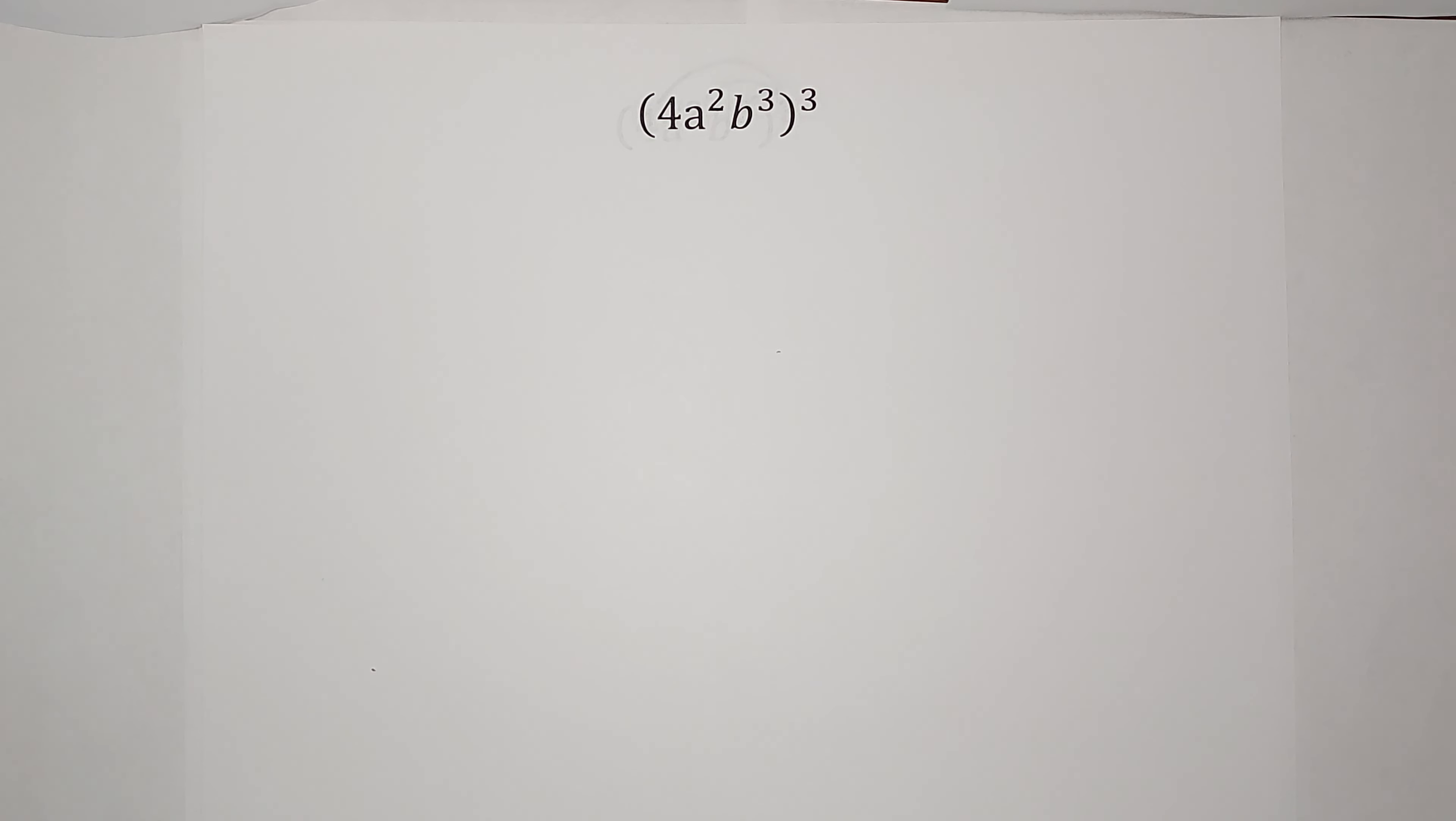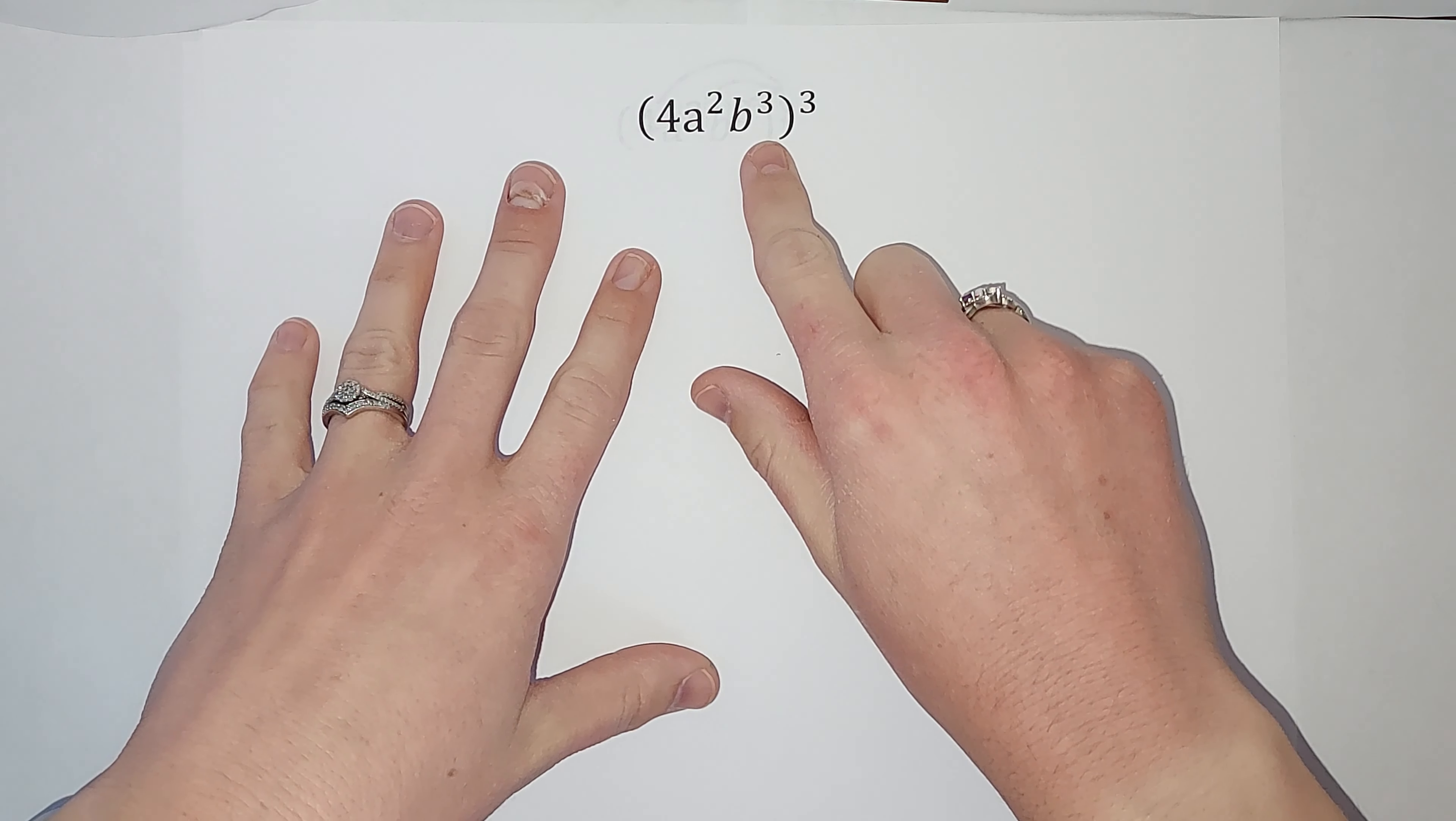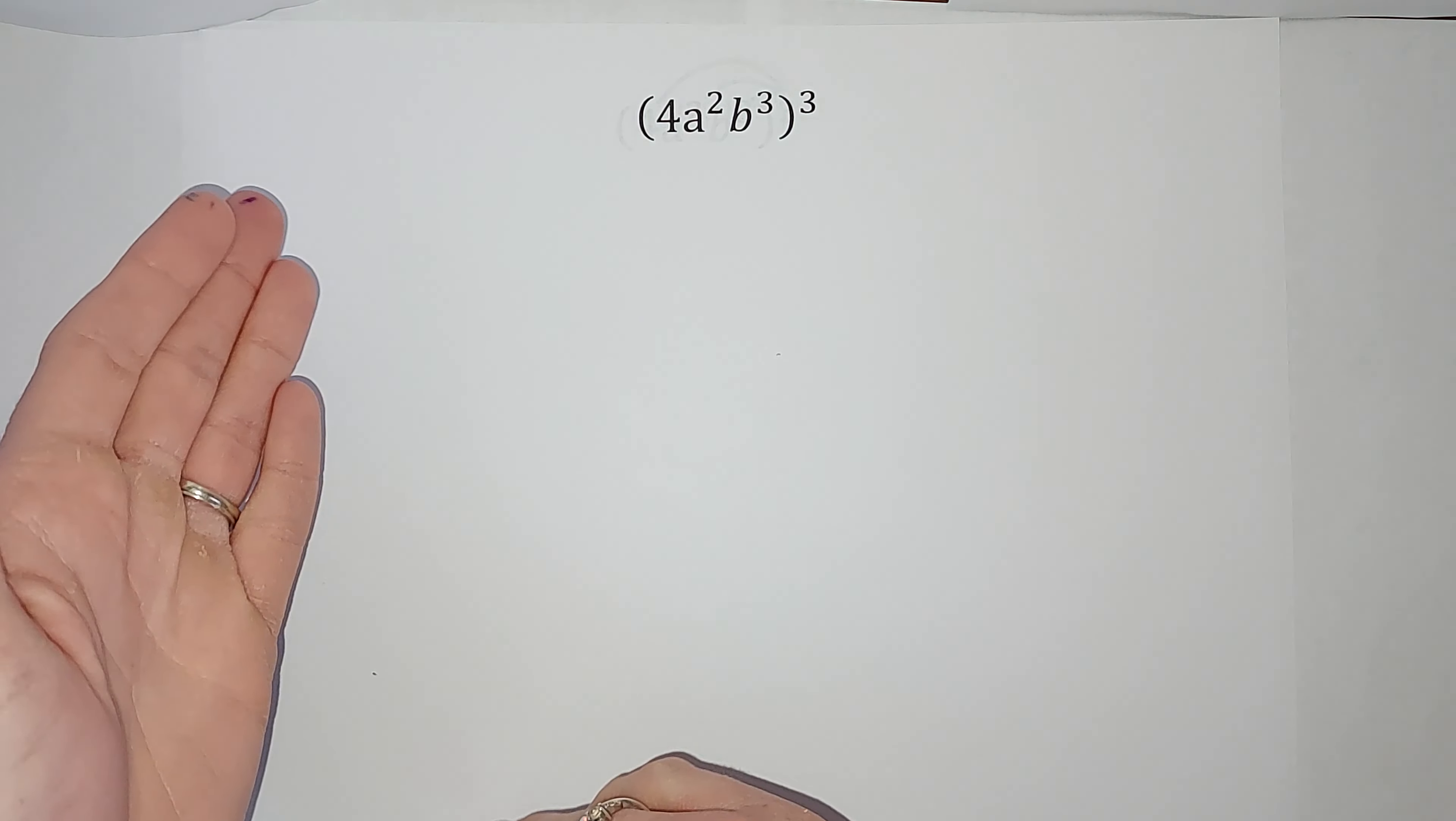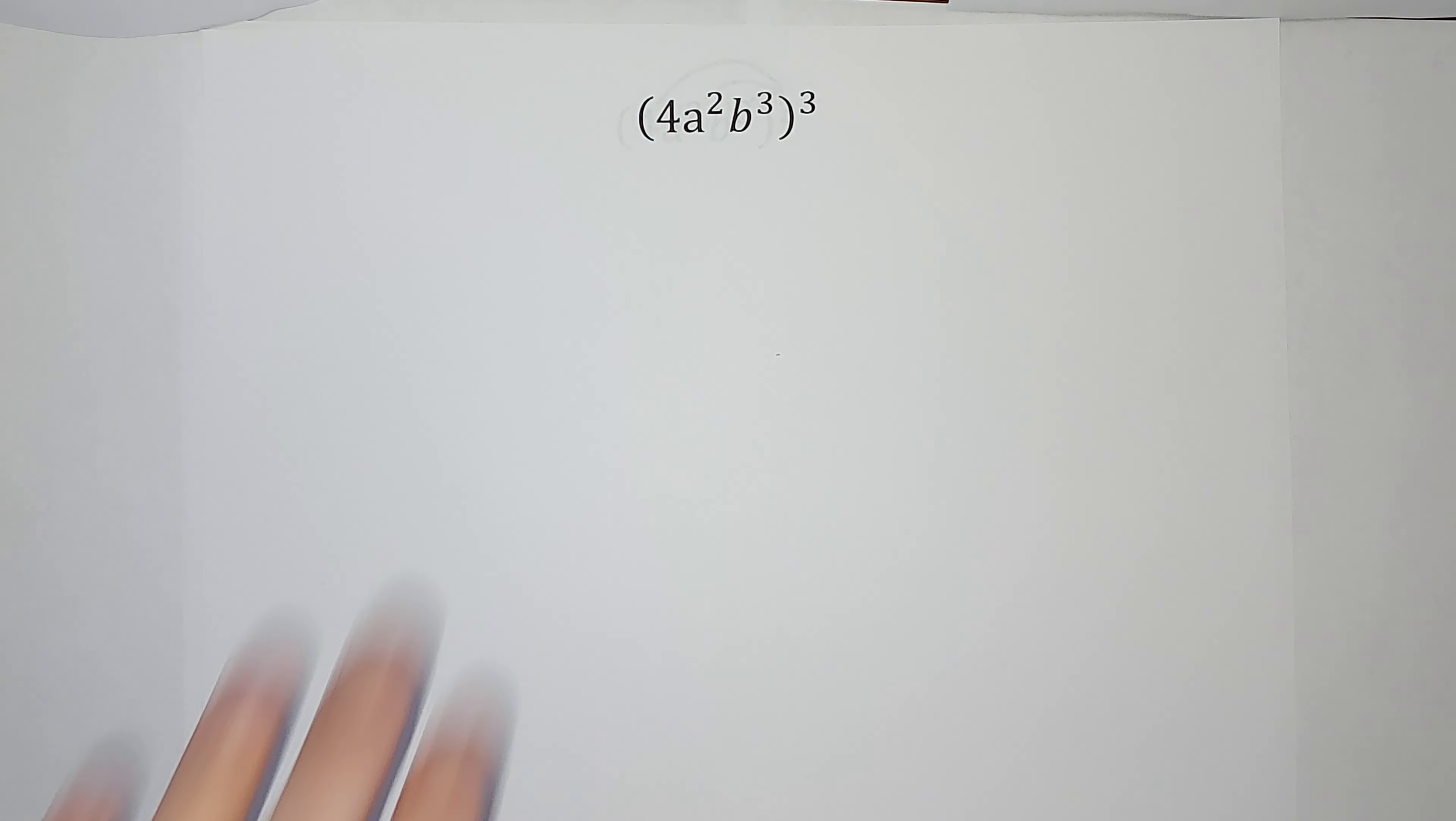We have here 4a squared b cubed all to the third power. When something has a three exponent, you can say cubed or to the third power. So this whole thing is being put to the third power.